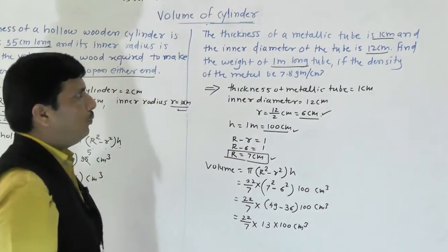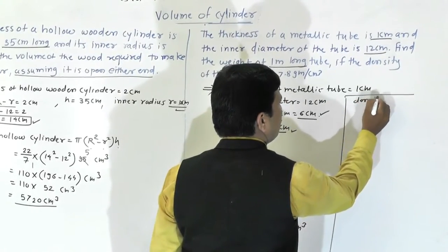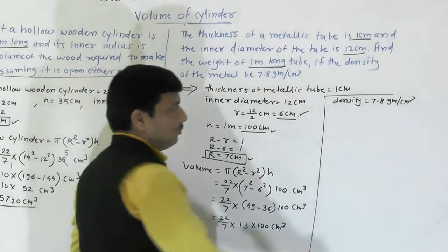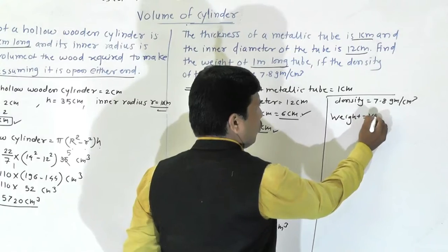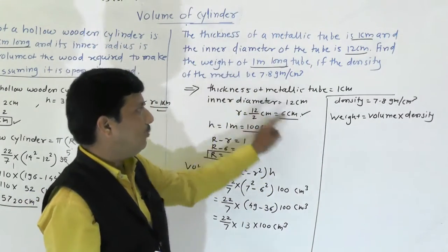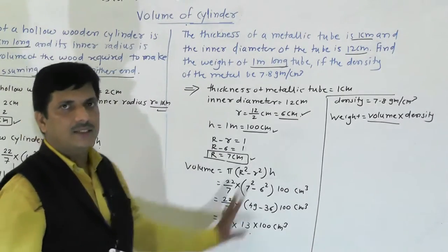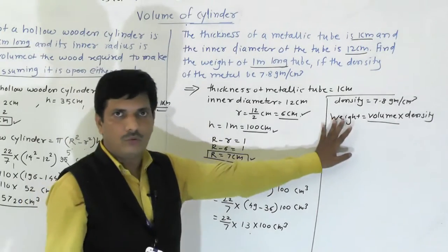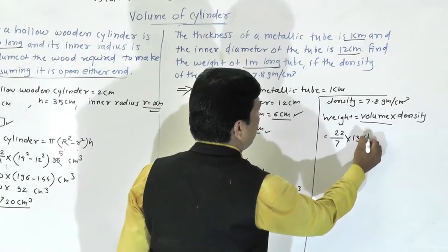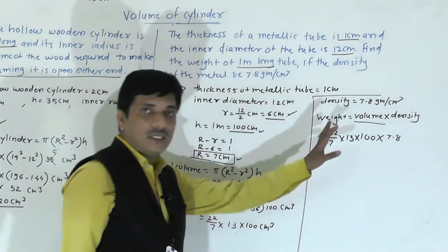They are asking for the weight of 1 metre long tube. Density is given as 7.8 grams per cm³. We know that Weight = Volume × Density. So weight = 22/7 × 13 × 100 × 7.8 grams. This answer will be in grams.